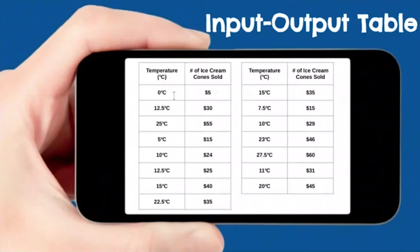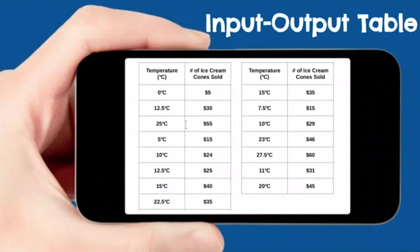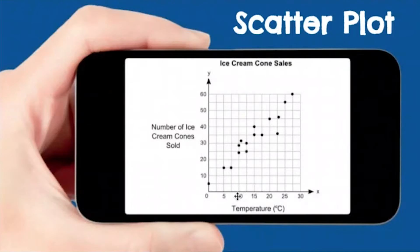So zero degrees Celsius, five dollars. If we look at our chart, zero degrees Celsius, five dollars. There is no rule for this input-output table, you're just basically graphing these numbers. So if we have 12.5 degrees Celsius, 30 dollars, we go to 12.5, and you can put your dot up here. That's basically it.